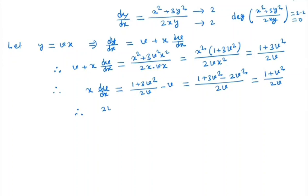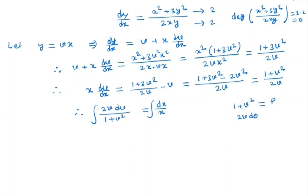So we get 2v dv by (1 plus v squared) equal to dx by x. We will now integrate both sides. Put 1 plus v squared equal to p, so 2v dv equals dp. The left-hand side becomes the integral of dp by p, which is ln|p|, and the right-hand side is ln|x|.